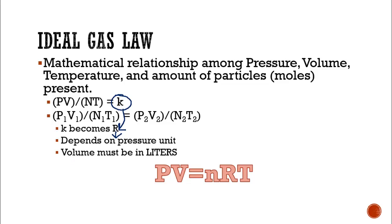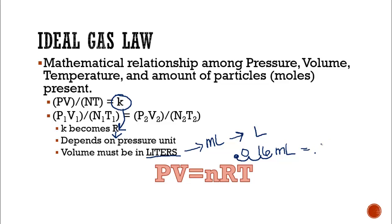The other big change is that our volume must be in liters. We've been doing a lot with milliliters, so how do we change milliliters into liters? If you have 16 milliliters, milliliters is small, so we are going to move the decimal point 3 places backwards — this equals 0.016 liters. We're going to make this number smaller when converting from milliliters to liters.